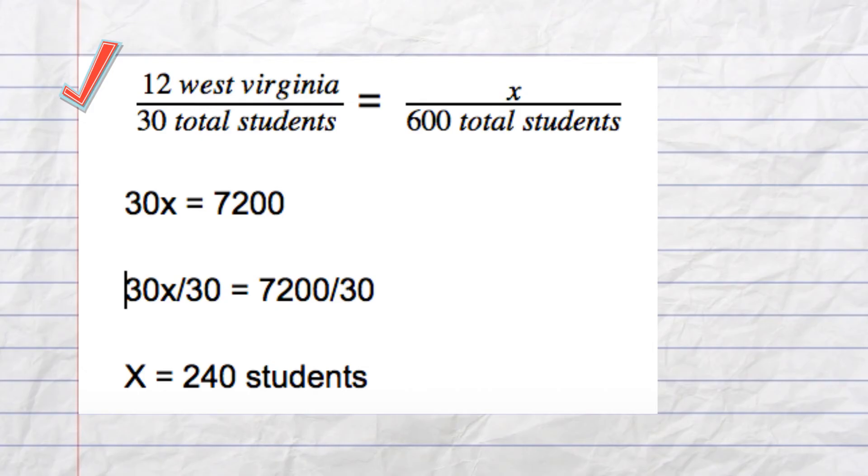We now do a cross product. 12 times 600 is 7200. X times 30 is 30X. Divide each side by 30 to isolate X.